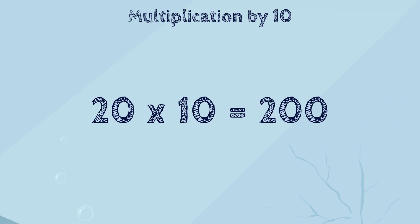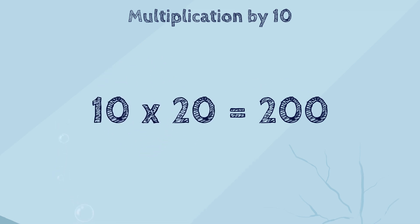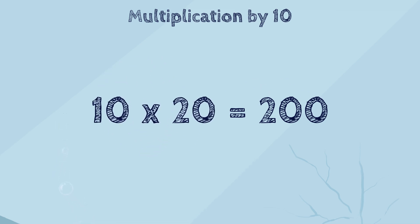Yes. And we also know that the order of the numbers doesn't matter in multiplication. So, this trick can still be used if ten is the first number too. Ten times twenty equals two hundred, and twenty times ten equals two hundred.